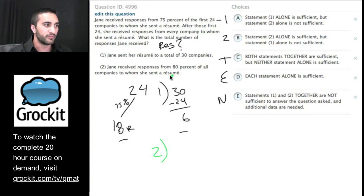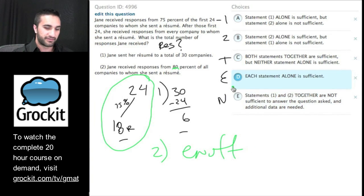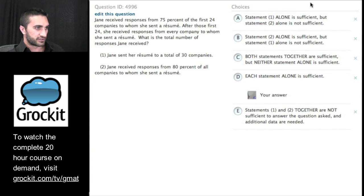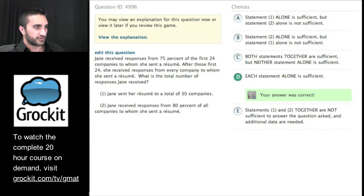Great. So in statement two, we know that Jane received responses from 80% of all companies to whom she sent a resume. We had some basic information that she got 75% of these 24. Then there are some other values that would get us to 80% of the total, and we should have enough information to work this. We don't actually have to do the math there. So I'm pretty sure each statement alone is sufficient.